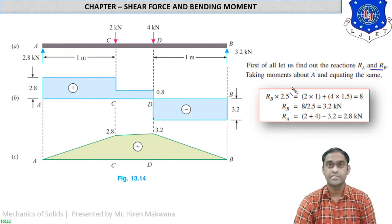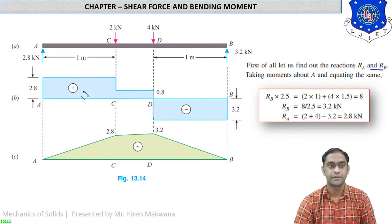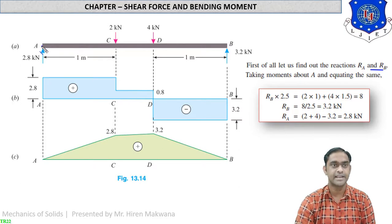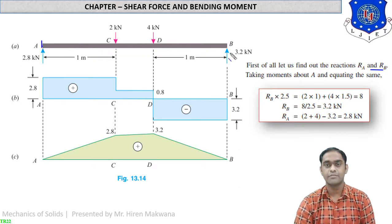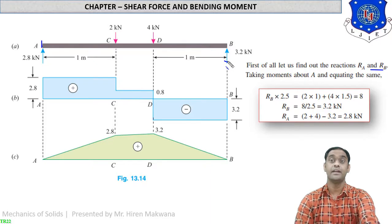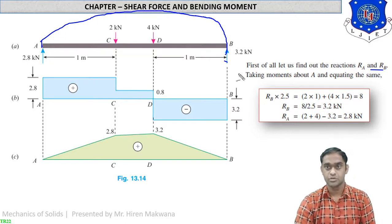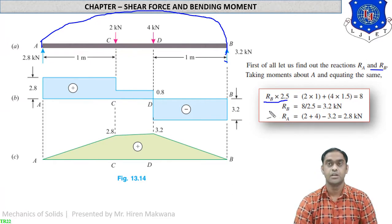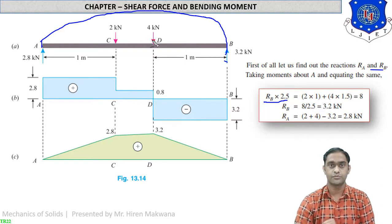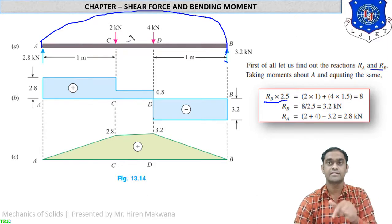To find the support reactions, remember the method from the previous chapter. Take moments at the left side point A. Starting from the opposite corner, reaction RB rotates in the anticlockwise direction over the total distance of 2.5 meter. So RB into 2.5 will be the anticlockwise moment, and the right side of the equation consists of the clockwise moments. The forces 4 kN and 2 kN going down rotate up to point A in the clockwise direction.